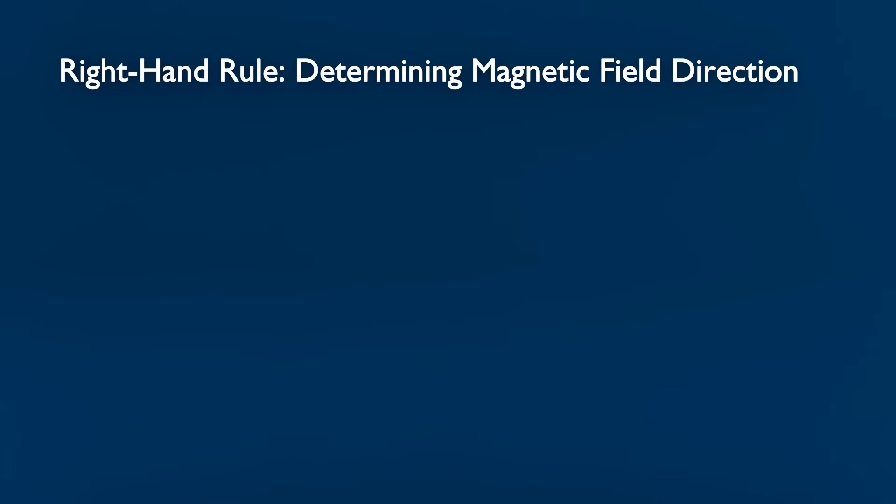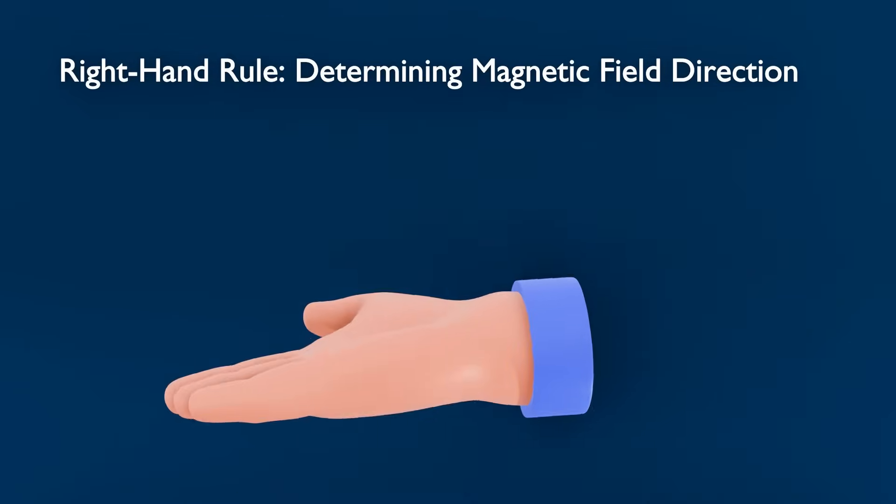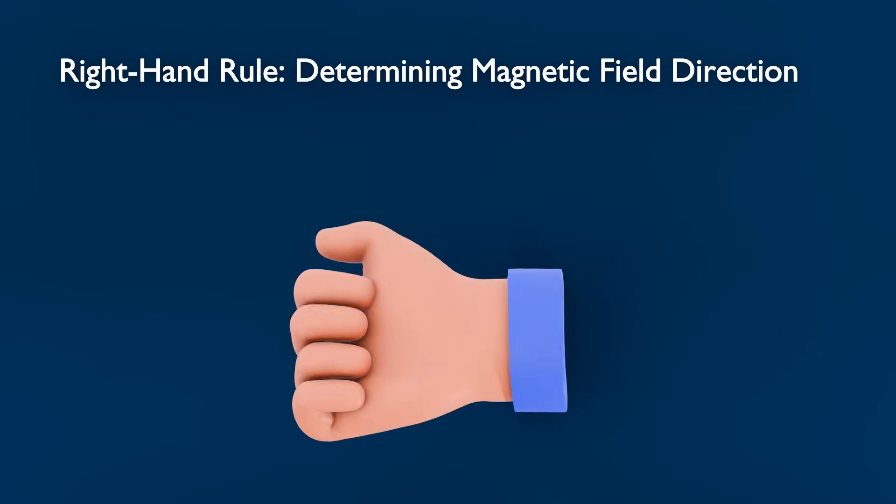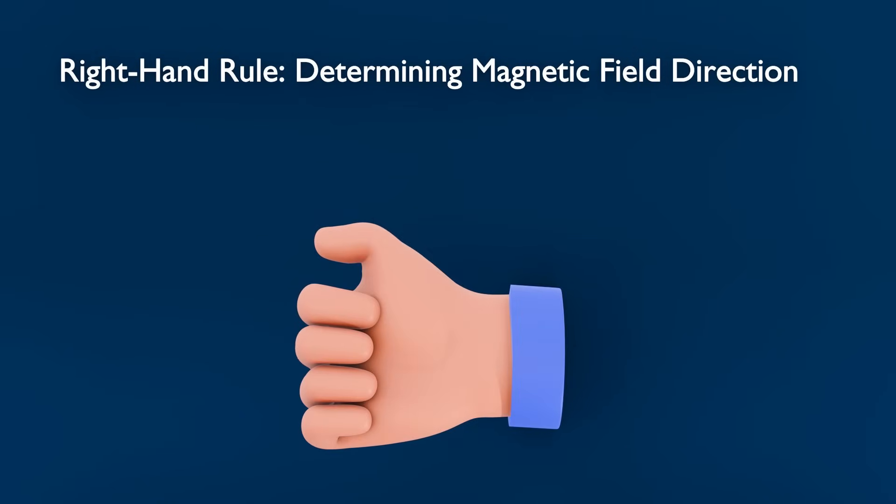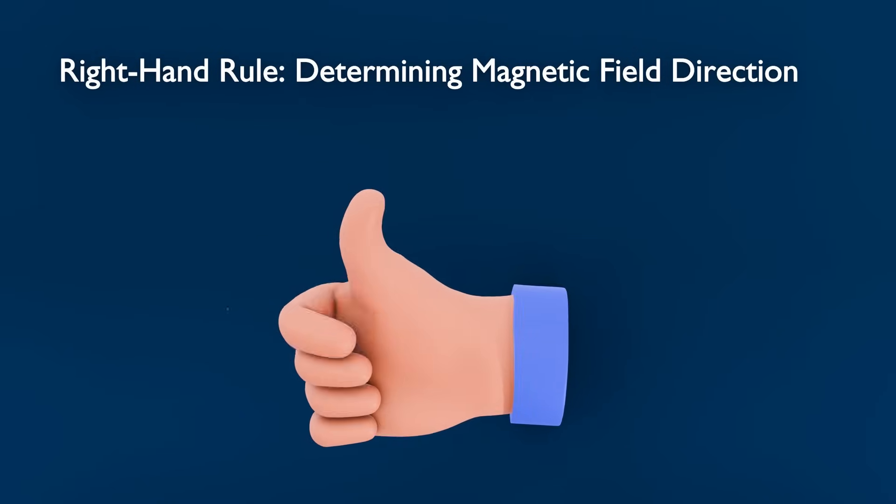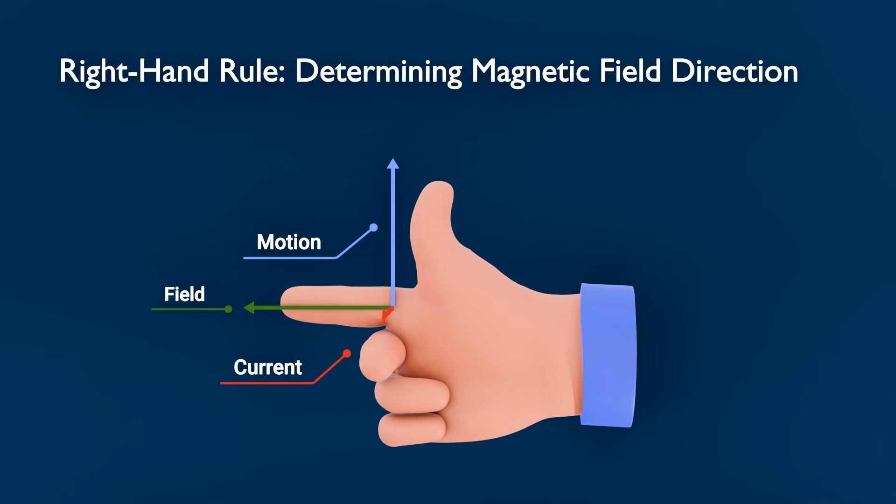Right hand rule. Determining magnetic field direction. Just like with magnets, you can use the right hand rule to figure out the direction of the magnetic field around the inductor. Point your thumb in the direction of the current through the coil. Your curled fingers show the direction of the magnetic field lines.